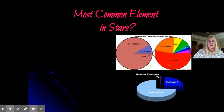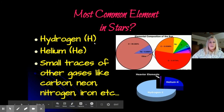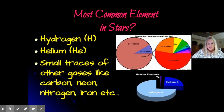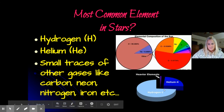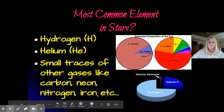What is the most common element in stars after all of this analysis? The most common element is hydrogen, abbreviated H. The second most abundant element in stars is helium, abbreviated He. There are also small traces of other gases in stars like carbon, neon, nitrogen, and iron. Here's a pie chart showing that most stars are predominantly hydrogen, then helium, and then a tiny sliver of other elements — and if you zoom in on 'other,' you can see some of those additional elements.